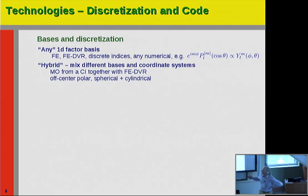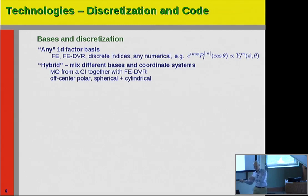We can also do hybrid — I mentioned that. We can mix different bases in the same place. The example is molecular orbitals from the CI together with the FemDVR, but we can also place off-center polar coordinate bases. We can combine spherical and cylindrical coordinates, because we have mixed different areas with different symmetries and we need these transitions. The laser pulse has linear cylindrical symmetry, but near the nucleus it's still the atom dominating.